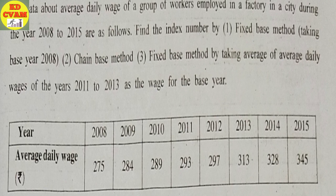The data about average daily wage of a group of workers employed in a factory in a city during the year 2008 to 2015 are as follows. Find the index number by: fixed base method taking the base year as 2008; chain base method; and fixed base method by taking average of average daily wages of the year 2011 to 2013 as the wage for the base year.